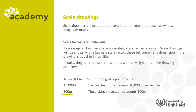So that first one — one centimeter equals 100 meters — means that one centimeter on a grid represents 100 meters. Similarly, the ratio of 1 to 10,000 means that one centimeter on a grid represents 10,000 centimeters in real life. And finally, the distance marked represents 100 meters.